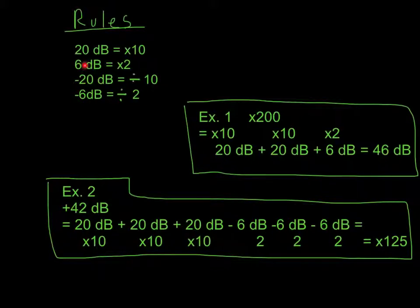If we're talking about voltage and we're talking about the ratio increase, any time I have a plus 20 dB, that's the same thing as times 10. Any time I have a plus 6 dB, that's the same thing as times 2. And minus 20 dB is divided by 10, and minus 6 dB is divided by 2.